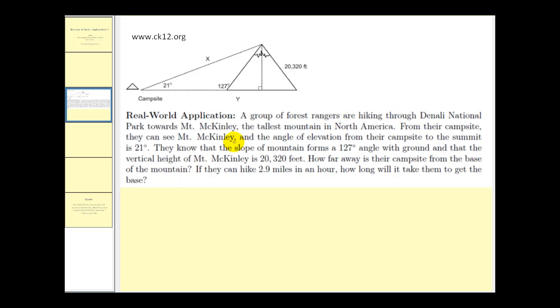From their campsite they can see Mount McKinley and the angle of elevation from their campsite to the summit is 21 degrees. They know the slope of the mountain forms a 127 degree angle with the ground and that the vertical height of Mount McKinley is 20,320 feet. So this angle is known to be 127 degrees and the height of the mountain is known to be 20,320 feet.